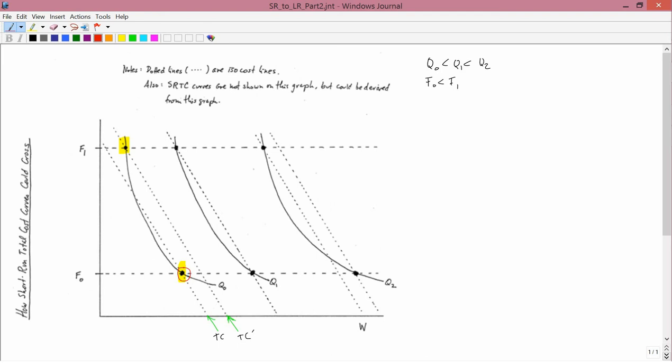And what's the cheapest way of producing Q1? Then you compare this point to this point because those are the only two relevant points. You know you want to produce Q1. There are only two ways to do it, using F0 and F1 because I'm only giving you two choices for fertilizer.